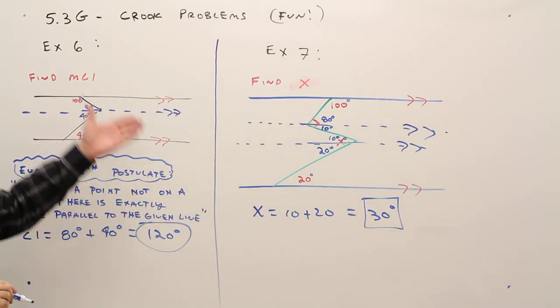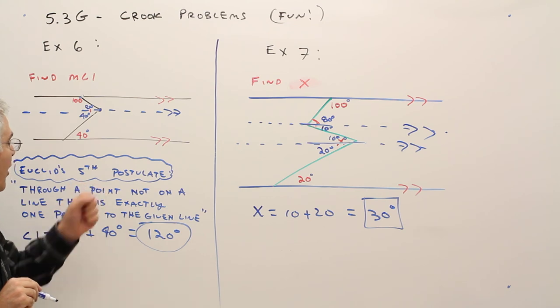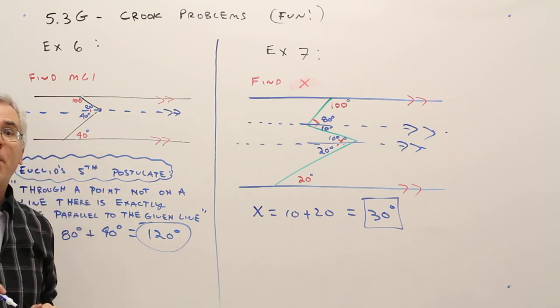So there you have it. How to do two fun crook problems, all based on Euclid's fifth postulate.